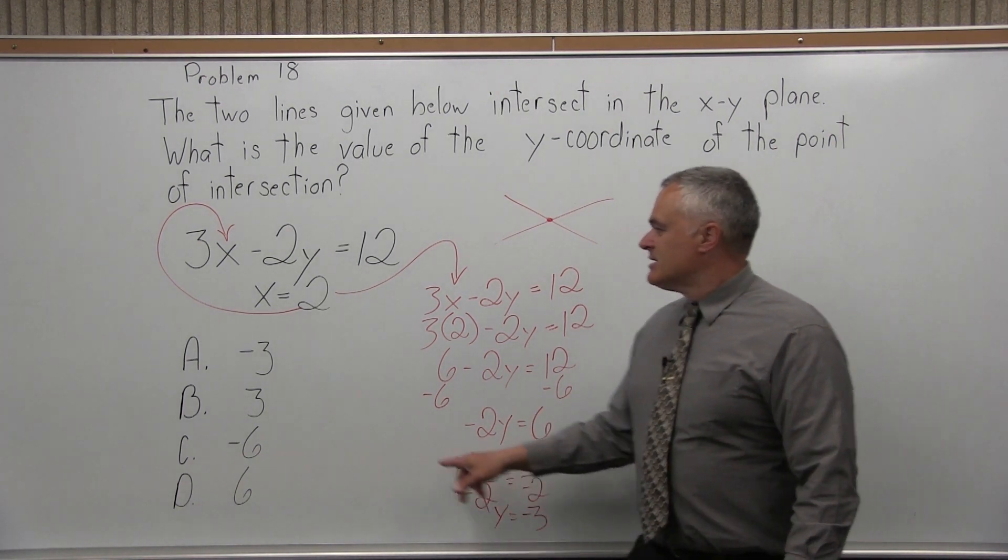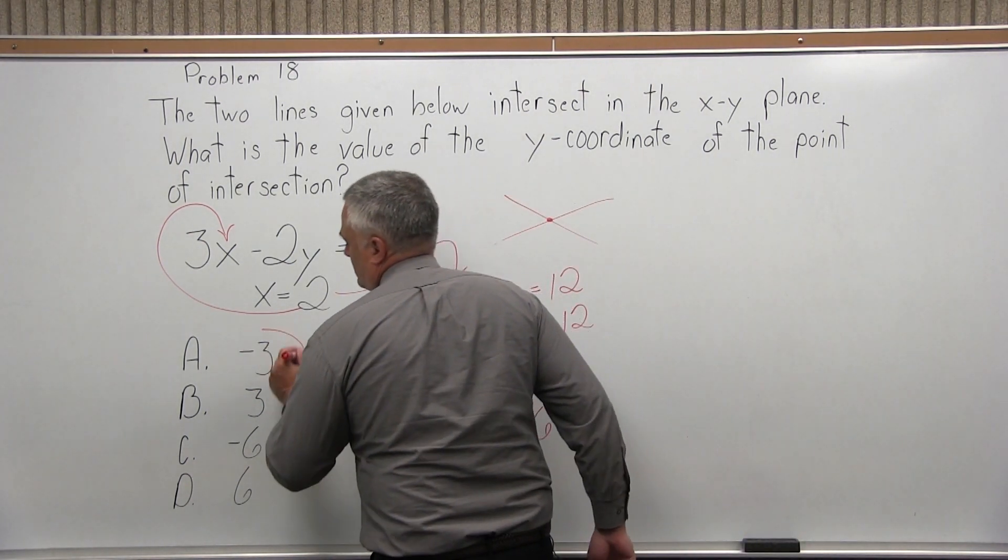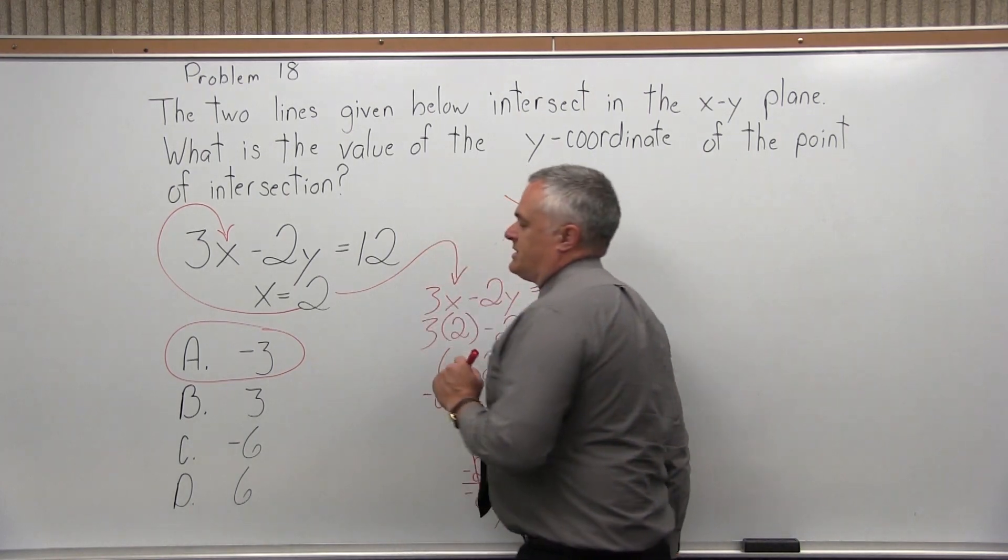Now I go back to my list of options. Negative 3 is one of them. That's option A. So the answer to Problem 18 is option A.